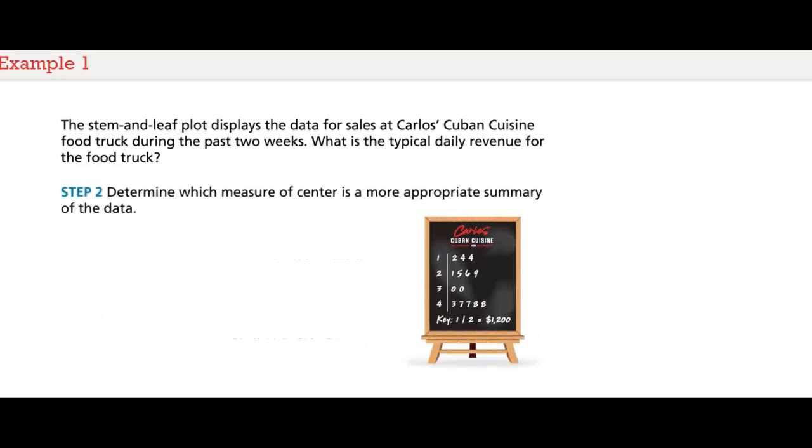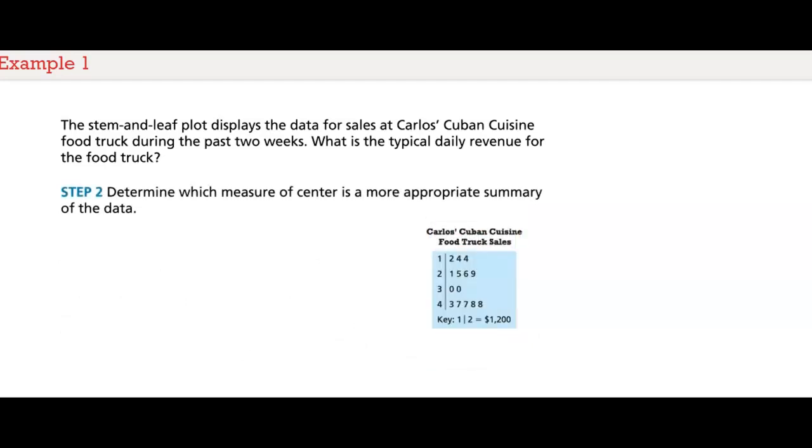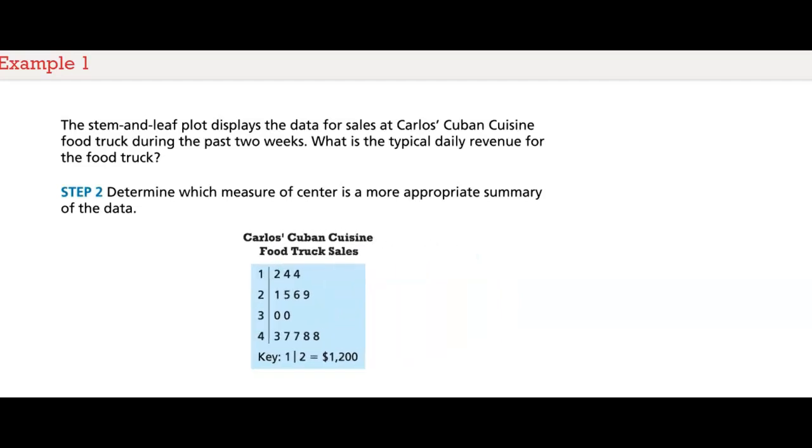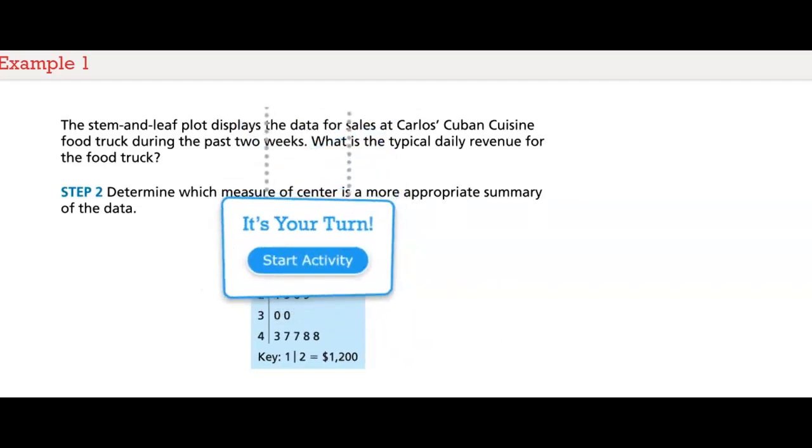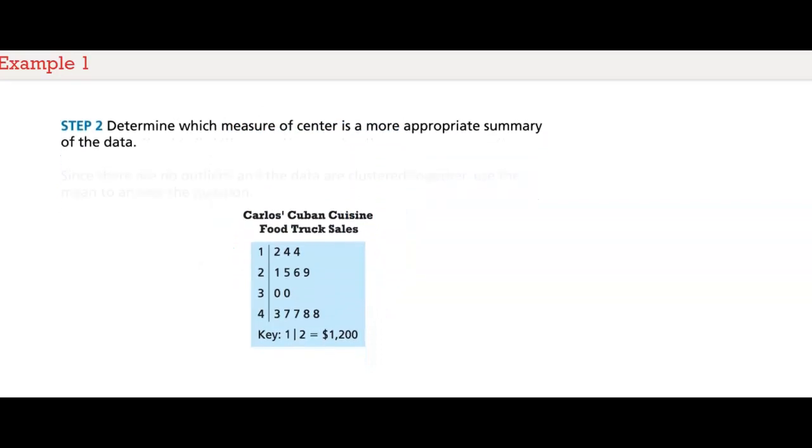Step 2: Determine which measure of center is a more appropriate summary of the data. Since there are no outliers and the data are clustered together, use the mean to answer the question.